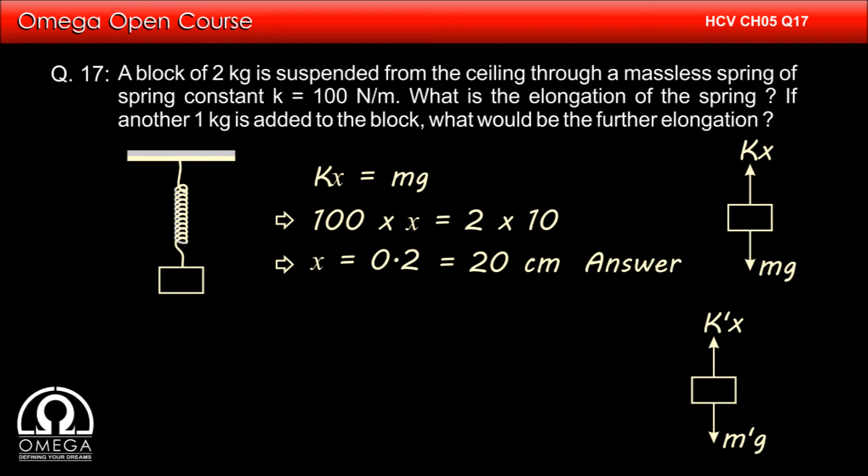Let us denote the mass of the block after 1 kg was added to it with m'. The gravitational force now acting on the block will be m' × g. Also, if x' be the new elongation in the spring, then the spring will apply kx' force in the upward direction.